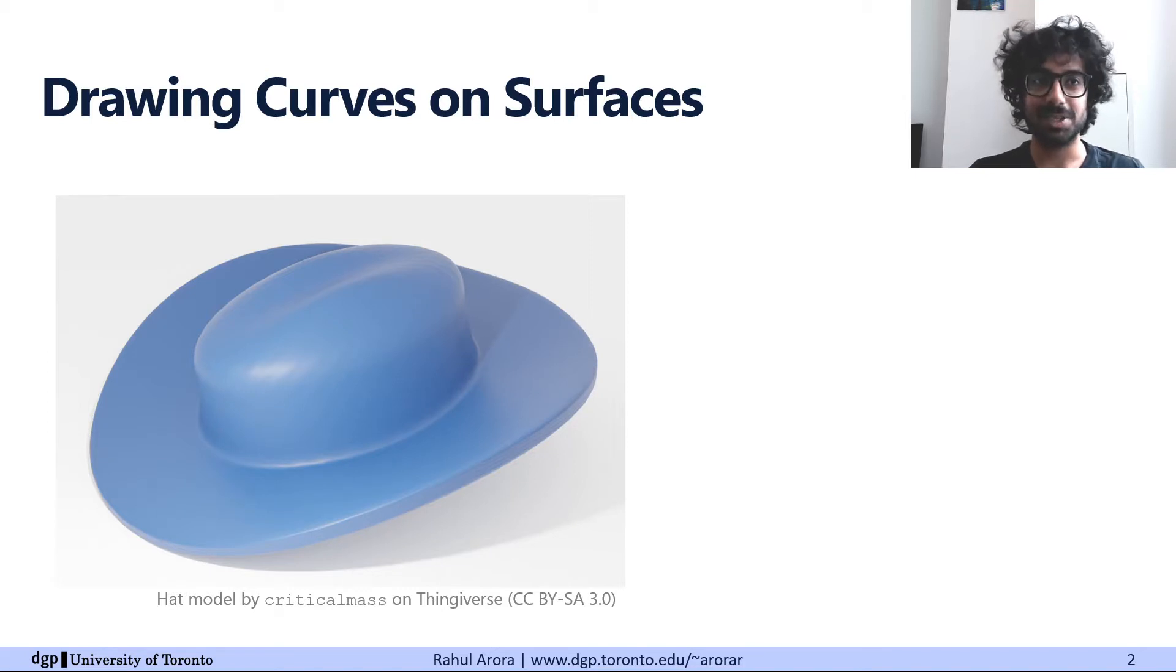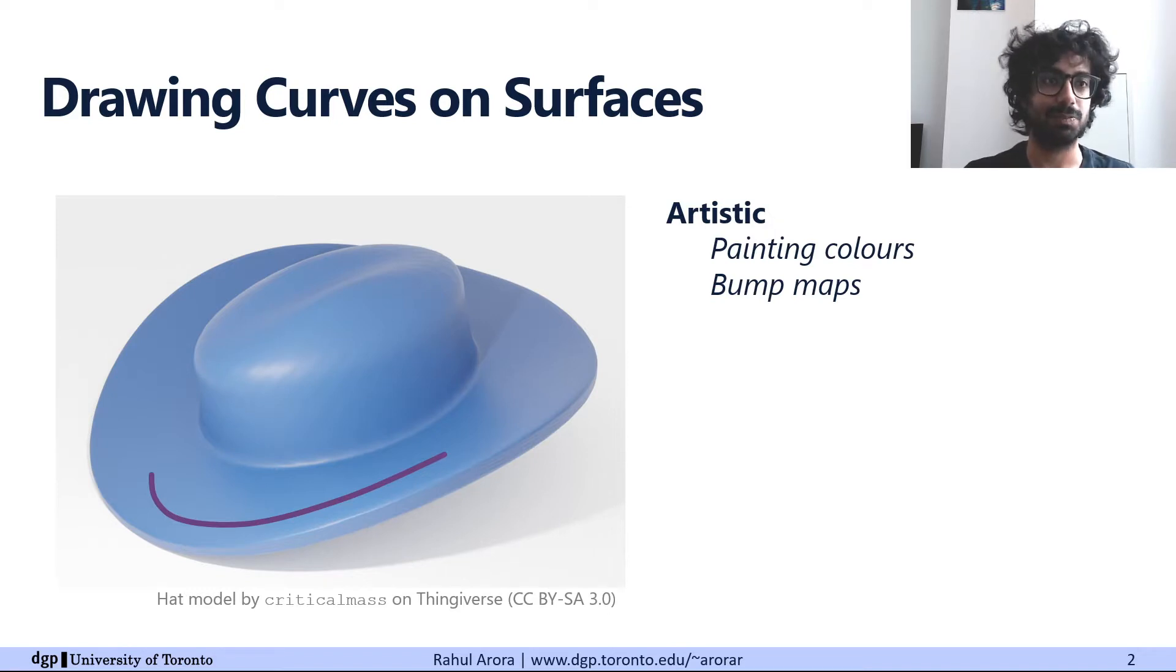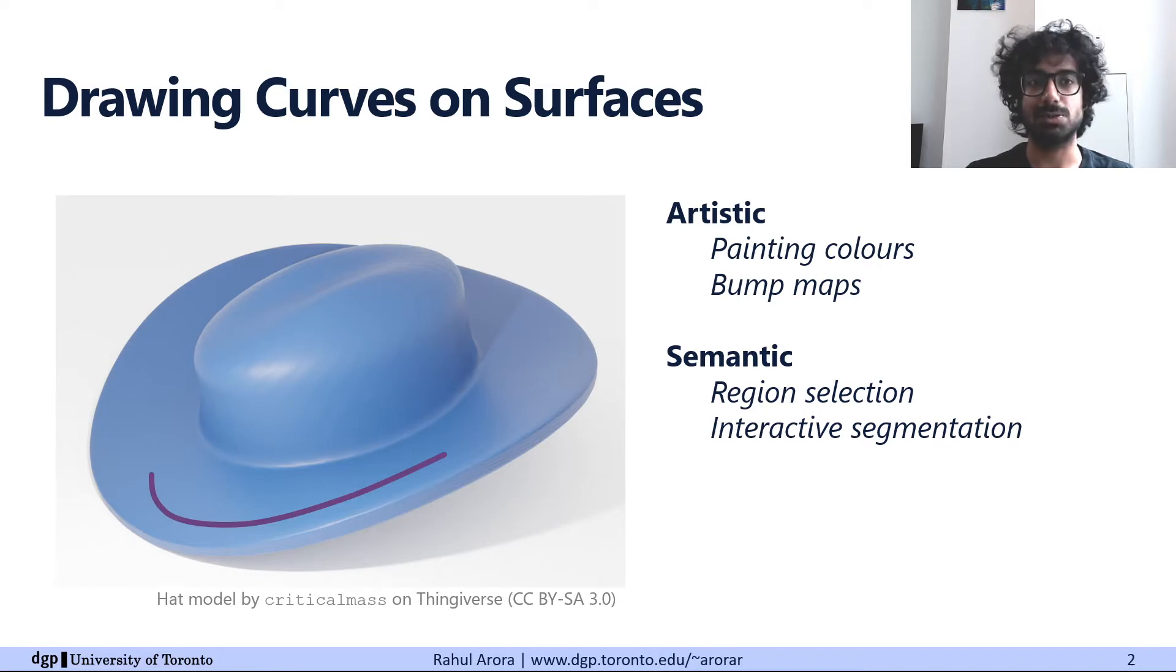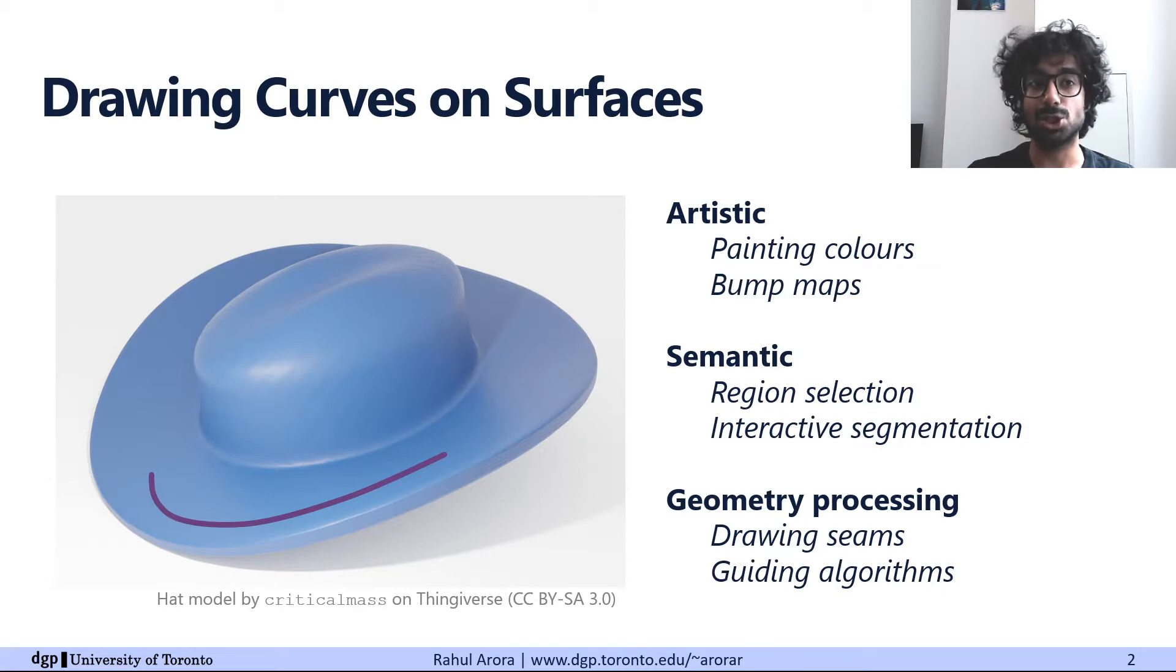Okay, so this paper is about creating curves onto surfaces. This is a fundamental interaction for multiple computer graphics applications. The most common use cases are artistic, for painting colors, bump maps, etc., onto a texture. But there are other applications for semantic purposes, such as region selection and interactive segmentation, and applications in geometry processing, including drawing seams for parameterization and guiding algorithms for vector field design, registration, etc.